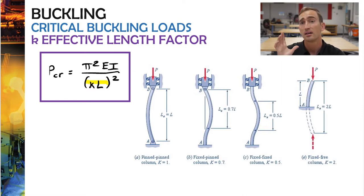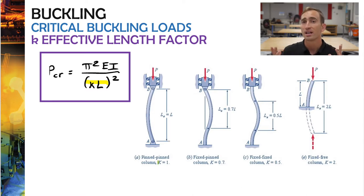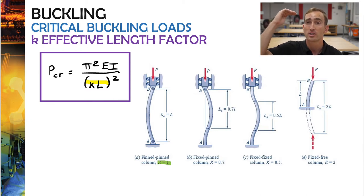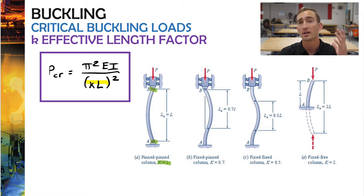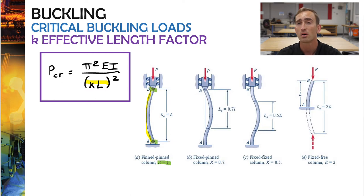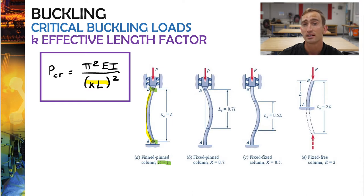Let's look at the effective length factor for the first example on the far left. This is when you have K equal to 1, where 100% of the length of the member can actually buckle and fail. This is the situation where you have a pin at the top and a pin at the bottom. The beam is totally free to rotate about both of those pins left and right. So 100% of the beam is available to actually buckle — that's why we say K is 1.